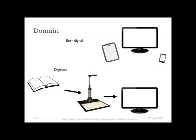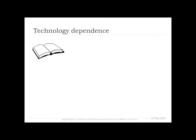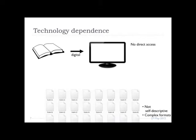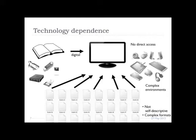We have born digital items delivered on a variety of platforms, and we have digitized items — print, video, or other materials that have become digital. Why do they need different metadata for long-term preservation than traditional materials? One reason is technology dependence. If I have a book, as long as I know the language I can make sense of it right away. With digital materials I don't have direct access. I have a set of files that are not necessarily self-descriptive, may have complex formats, file names might not be meaningful, and file extensions might not be correct.